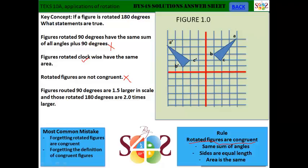The fourth statement is: figures rotated 90 degrees are 1.5 larger in scale and those rotated 180 degrees are 2 times larger. This statement is false since rotated figures will not be scaled unless stated in the question. And here in the question, it says if a figure is rotated 180 degrees, it did not mention anything about being scaled larger or made smaller.